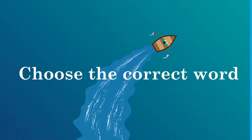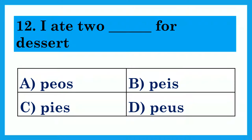Choose the correct word. I ate two dash for dessert. Option A: Paws. Option B: Peace. Option C: Pies. Option D: Purse. The answer is Pies — I ate two pies for dessert.